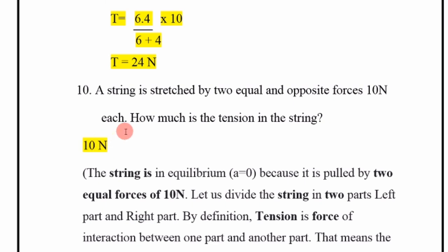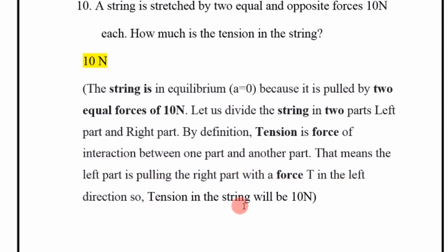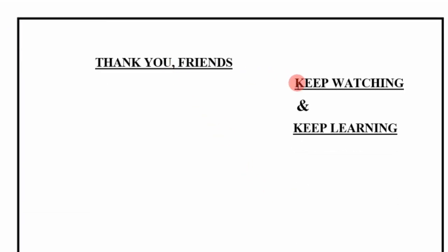A string is stretched by two equal and opposite forces of 10 Newton each. How much is the tension in the string? The string is in equilibrium because it is pulled by two equal forces of 10 Newton. Dividing the string into left and right parts, by definition tension is the force of interaction between the two parts. The left part pulls the right part, so tension in the string is 10 Newton. Thank you friends, keep watching and keep learning. Allah Hafiz.